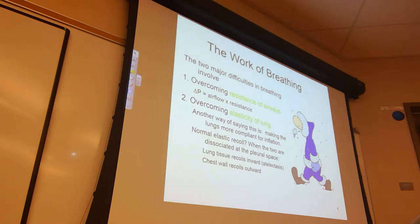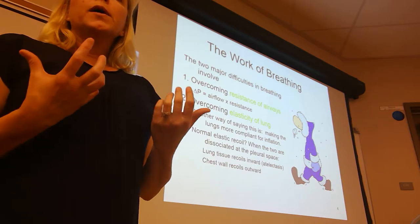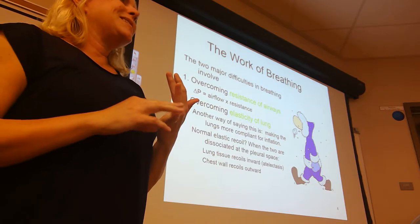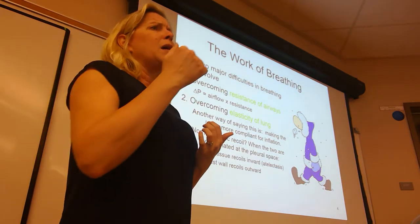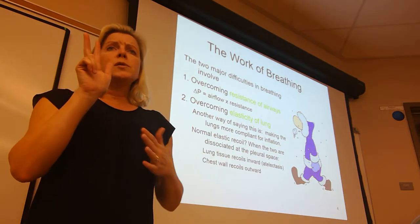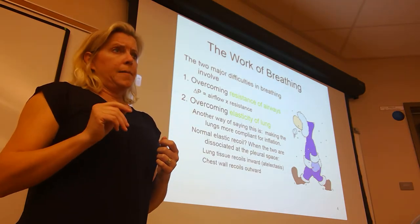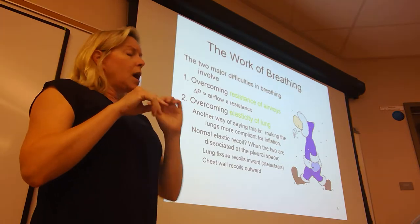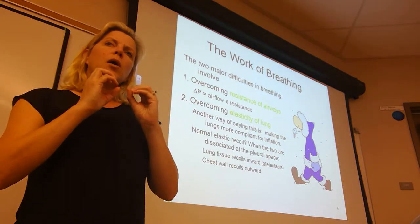When talking about breathing and the work of breathing, there are two main things we must overcome. First, we need to overcome the resistance of the air passageways — we come back to Poiseuille's Law. We know that radius is the most important factor for resistance. We have air passageways without cartilage to keep them open, surrounded by smooth muscle like small bronchioles, and that smooth muscle can contract, leading to bronchial constriction.